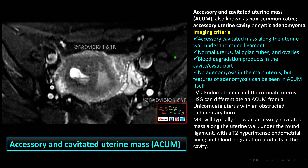The criteria for diagnosis of ACOM: whenever you see a cavitary mass along the uterine wall under the round ligament, these cystic lesions will be seen there. The normal uterus, fallopian tubes, and ovaries will be seen. Sometimes there will be blood degradation products within the cystic lesion. No adenomyosis in the main uterus, but adenomyosis can sometimes be seen in the cavitary mass. Common differentials are endometrioma or unicornate uterus. HSG can differentiate ACOM from unicornate uterus with an obstructed rudimentary horn. MRI is the classical imaging modality of choice.